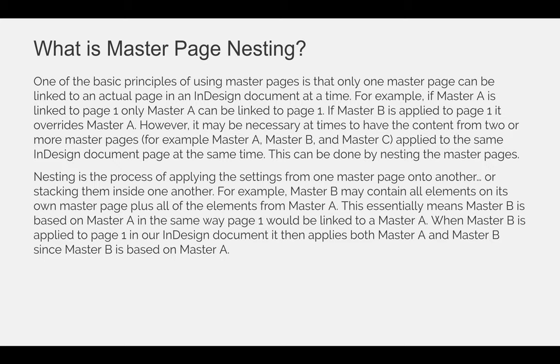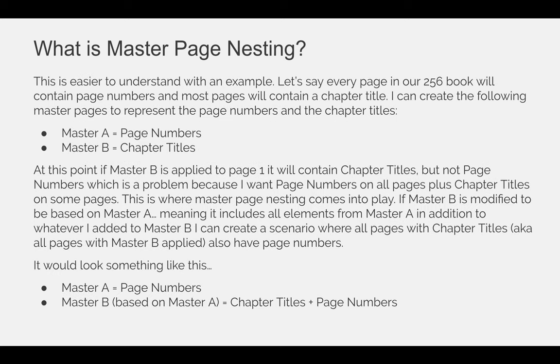Now that's a lot of words and it's a little difficult to understand, so let's go through that using a specific example — this is easier to understand with an example. Let's say that every page in a 256-page book will contain page numbers, and most pages will contain a chapter title. I can create the following master pages to represent the page numbers and the chapter titles, but I need to create them on two different master pages.